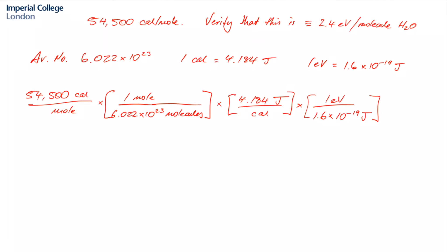So if we look now, we can cancel out moles and moles, we can cancel out calories and calories, and we can cancel out joules and joules. So we're just left with units of electron volt per molecule. And if we calculate that,